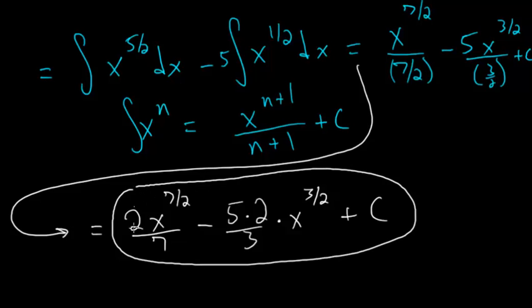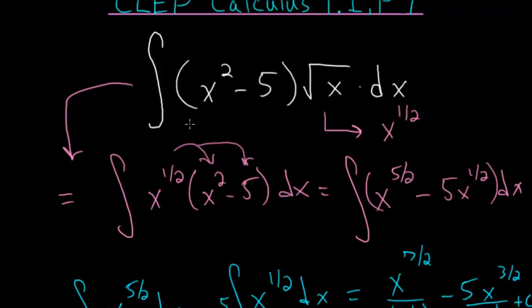You can always check your work with integration by taking the derivative of this result, and you will get back the expression x squared minus five times the square root of x.